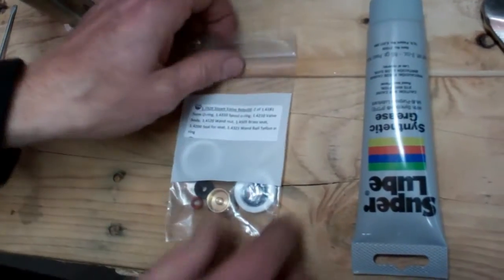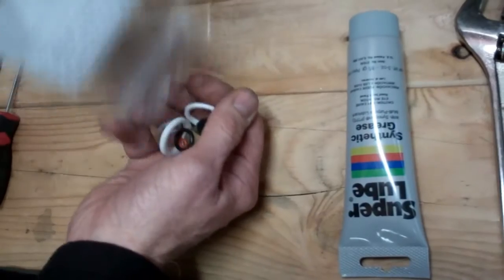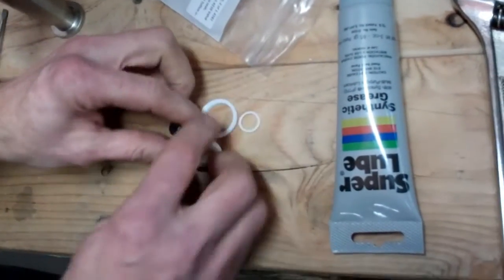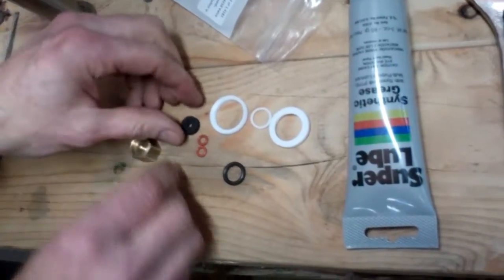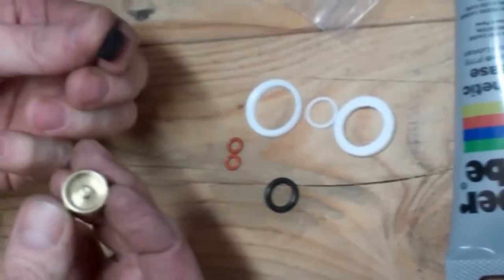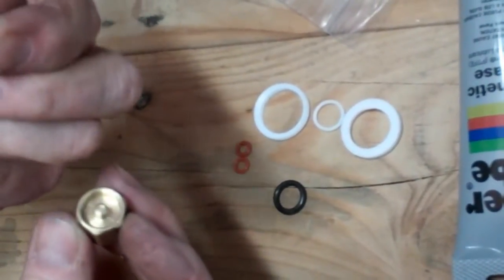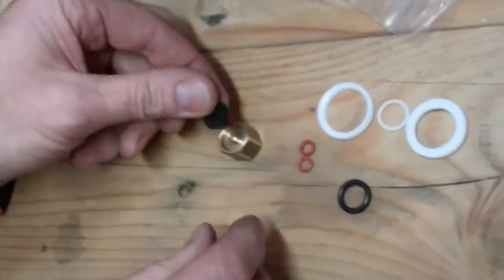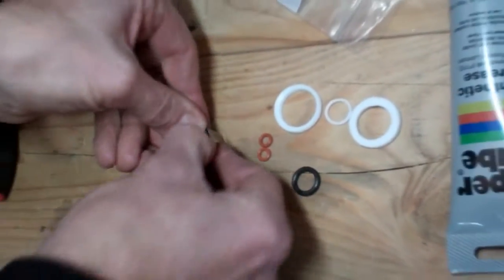The parts in the steam valve rebuild kit are the O-rings and the small bits that go inside. If you need to install the gasket face that is the seal inside the steam valve, there's a little bit of a trick to it.